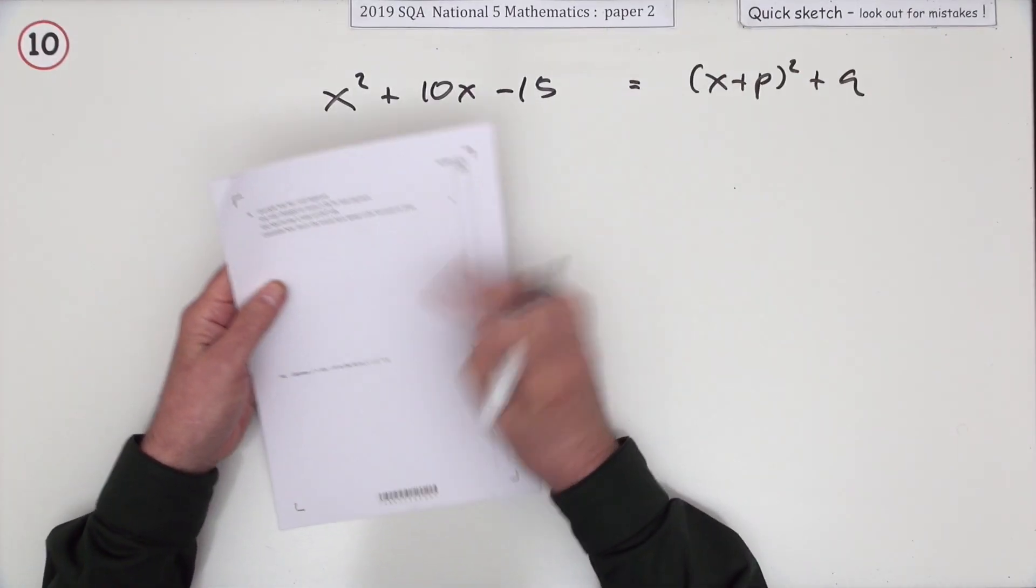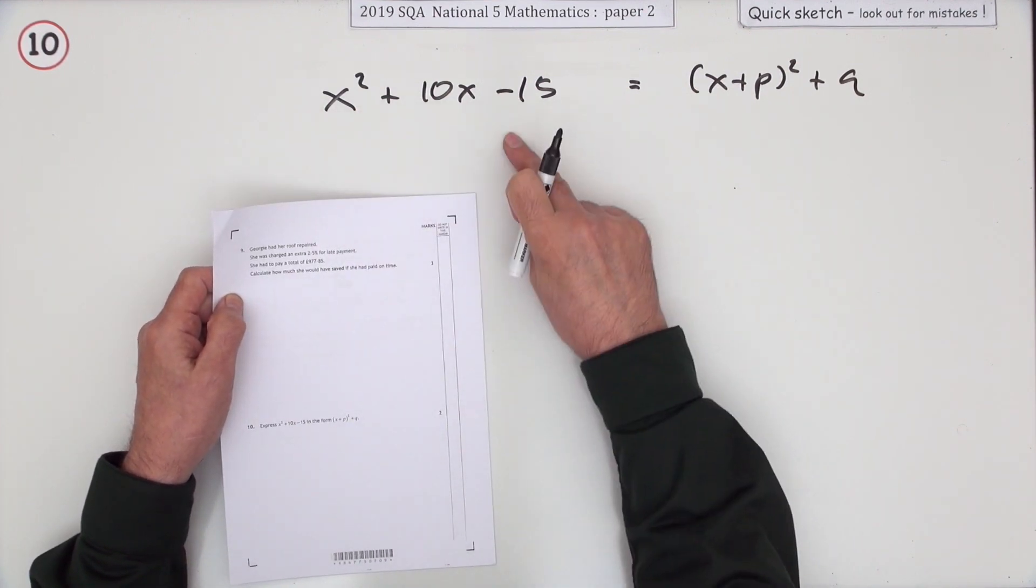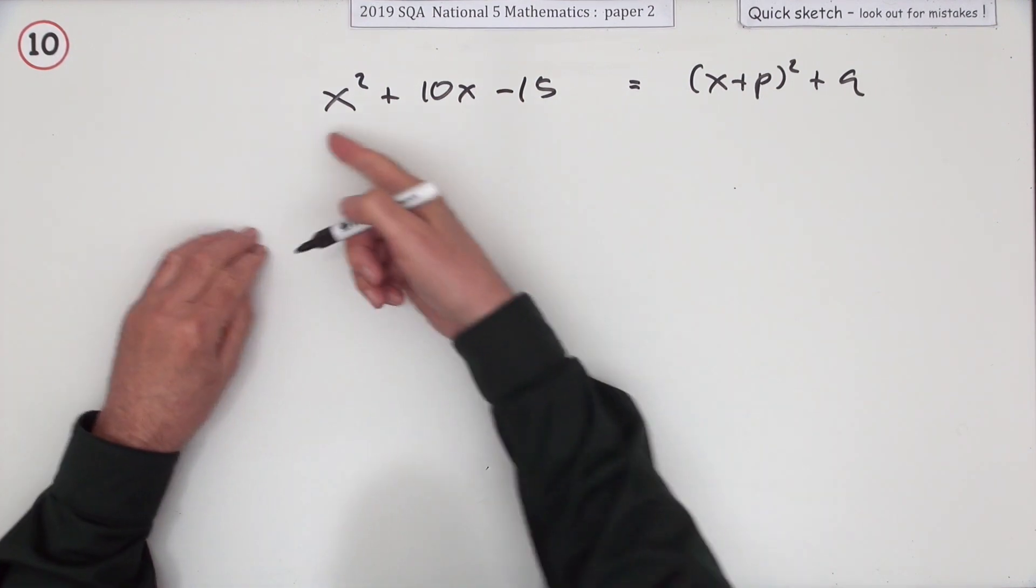Number 10, just a short question for two marks because there's not really a great deal to do. It says express this in this form, which you know is complete the square.